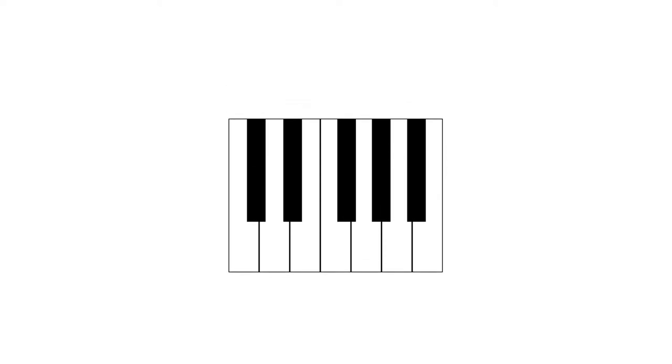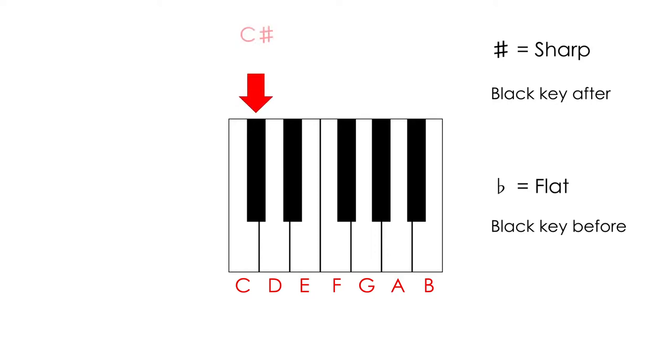The black keys don't have their own names. Instead, they borrow the name of the white key before or after, adding sharp or flat. Sharp means that it is the black key after a certain note, and flat means that it is the black key before a certain note. For example, this key could be called C sharp, since it is the black key after C, or D flat, since it is the black key before D. So technically, we could say that the black keys have two equivalent names, at least in our modern musical system. But musicians usually give preference to one of the two names.